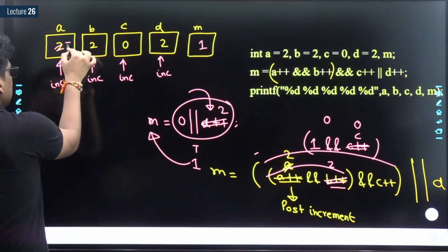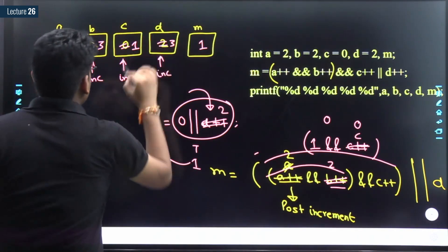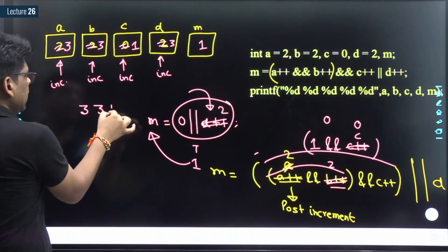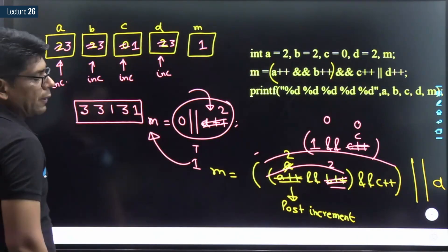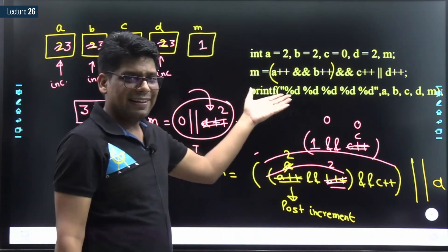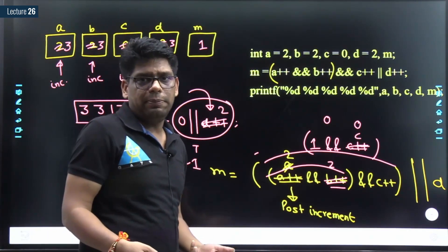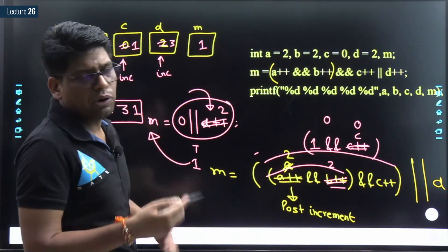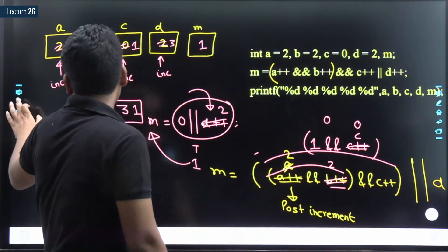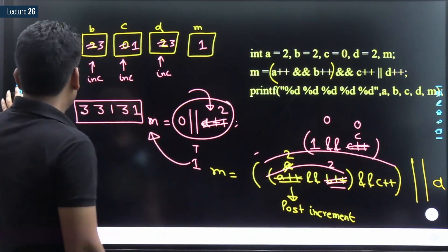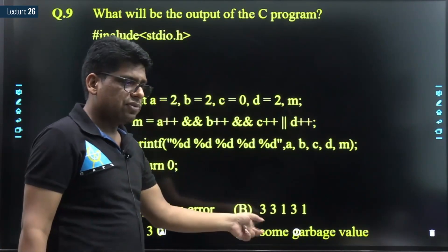So after all post-increments: a becomes 3, b becomes 3, c becomes 1, d becomes 3, and m is 1. The output of this code is 3, 3, 1, 3, 1. It looks difficult initially but it's easy once you understand increment, decrement, modify operators, logical AND, logical OR, and short-circuit property. The answer is option B: 3, 3, 1, 3, 1.